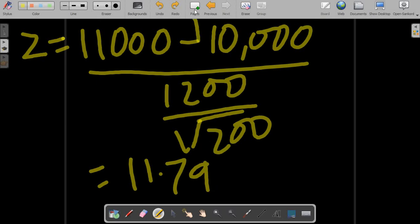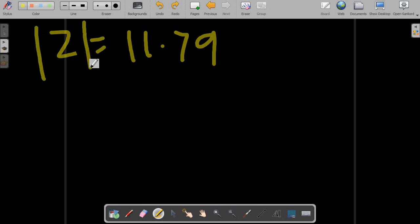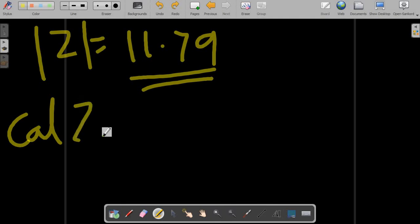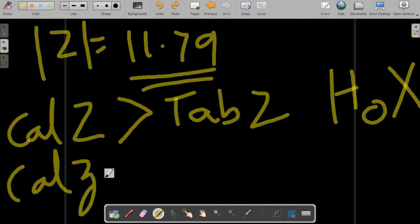How do we interpret this value? My z equals to 11.79. The calculated z value always has to be taken in modulus, that is to say, I will consider only the absolute value. You ignore the signs. The calculated z, if it is greater than tabulated z, then you have to reject the null hypothesis.